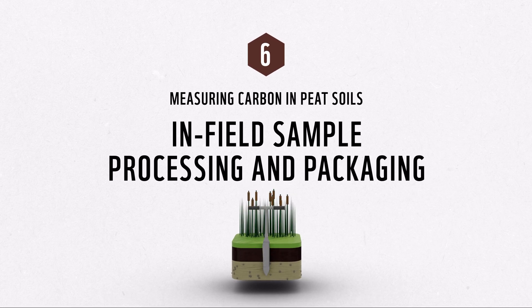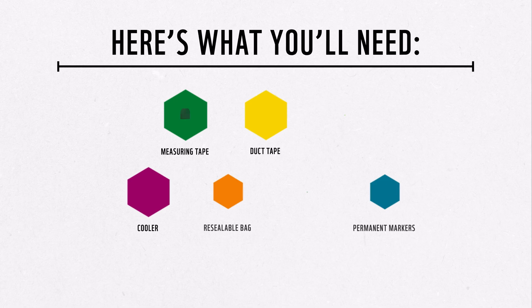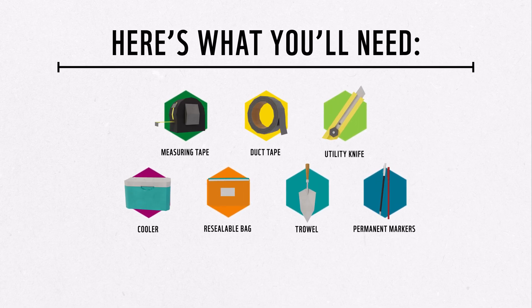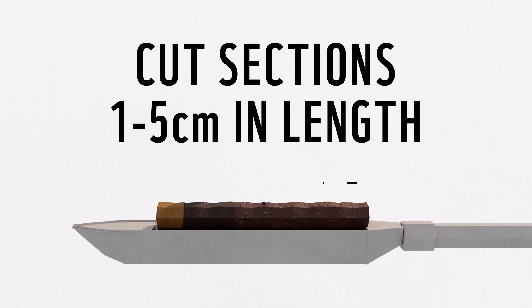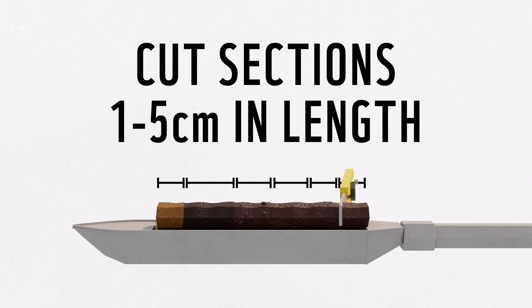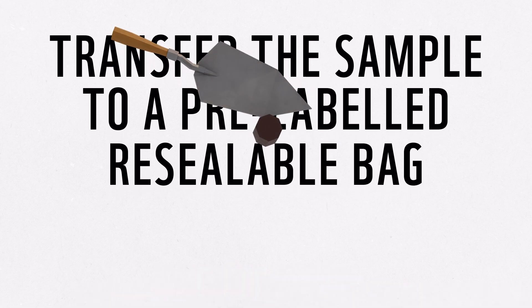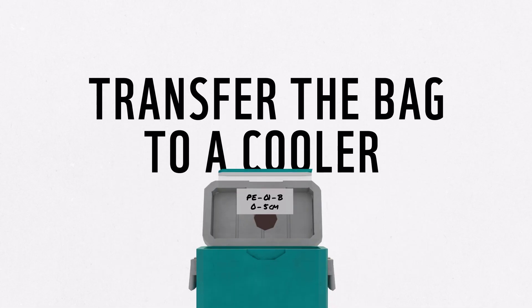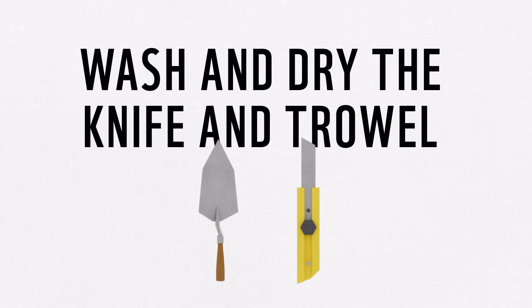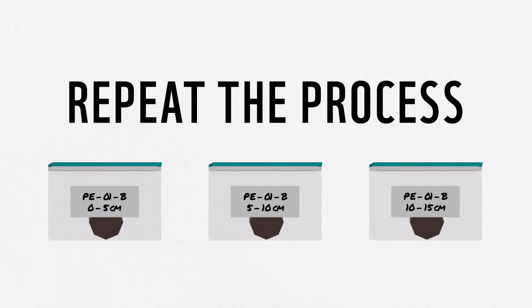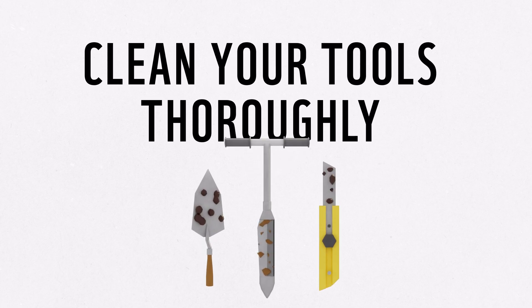Another option is to section the peat core in the field. To section the cores in the field, start at the top of the peat core and cut sections one to five centimeters in length, or wherever there is a noticeable change in soil type. With the knife remaining where it made the cut, use a trowel to transfer the sample to a pre-labeled resealable bag. Immediately transfer the resealable bag to a cooler. Wash and dry the knife and trowel. Repeat this process until the entire peat core is sectioned and packaged in the cooler. After everything has been packaged, clean the core and tools thoroughly.